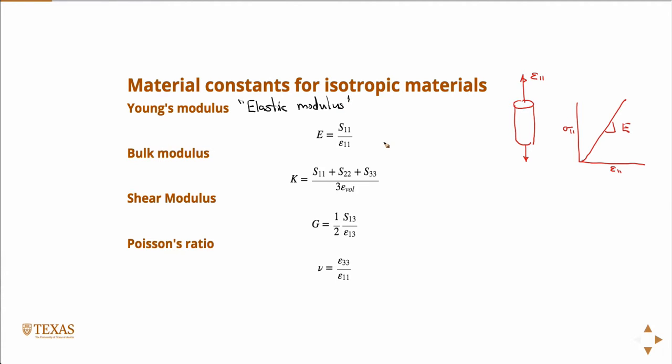The bulk modulus is if we go back to our cube and we apply a hydrostatic stress. I think we already defined that the hydrostatic stress is equal to, if you have sigma 1, sigma 2, sigma 3, the hydrostatic stress is the average of those stresses. So sigma 1 plus sigma 2 plus sigma 3 over 3, or using the notation of the stress tensor, S11 plus S22 plus S33 divided by 3.